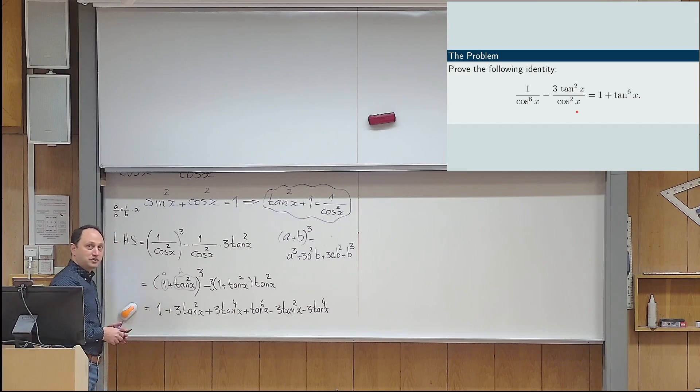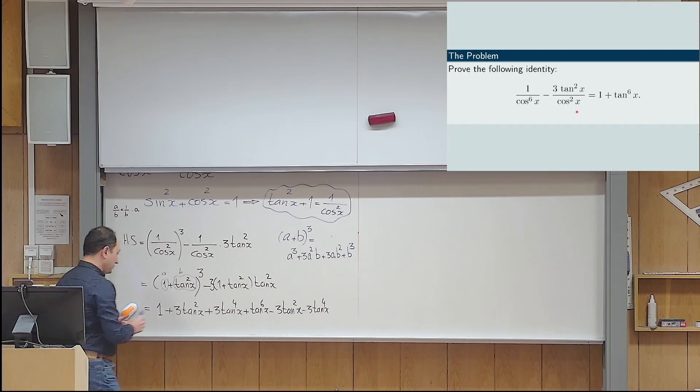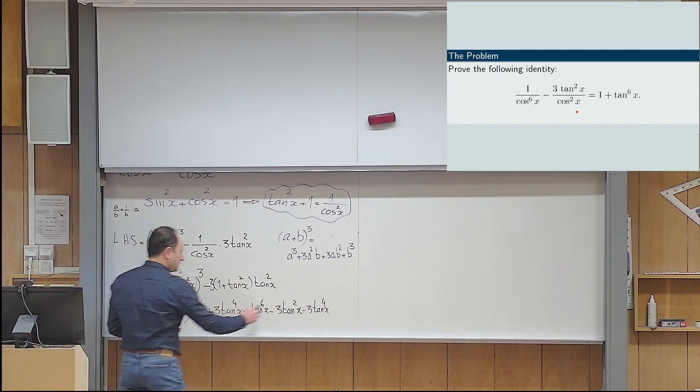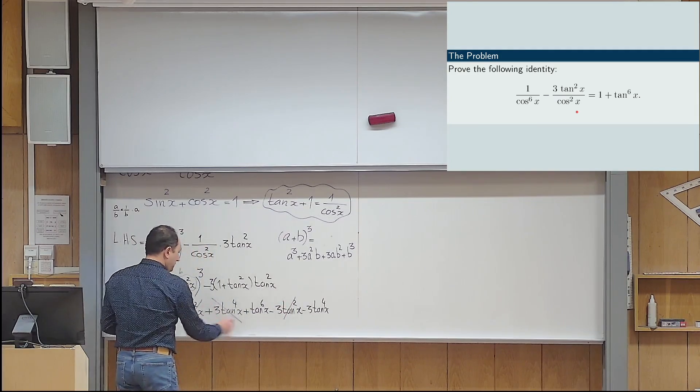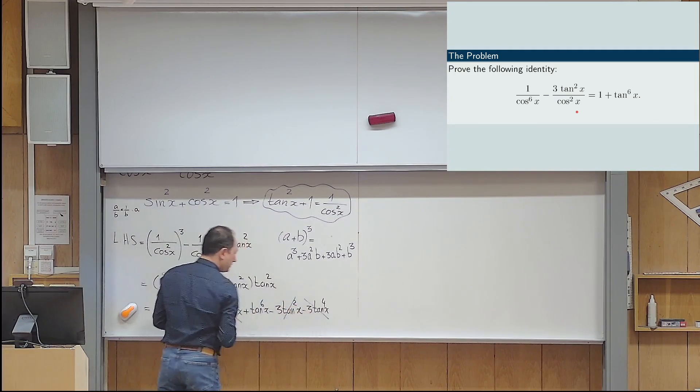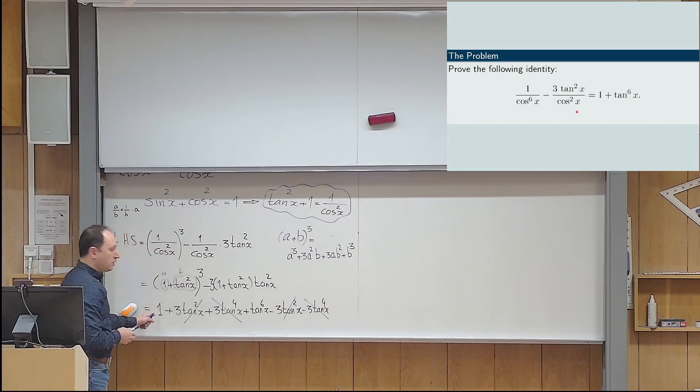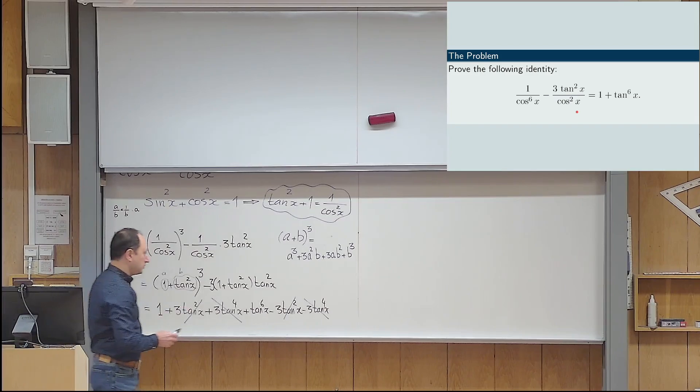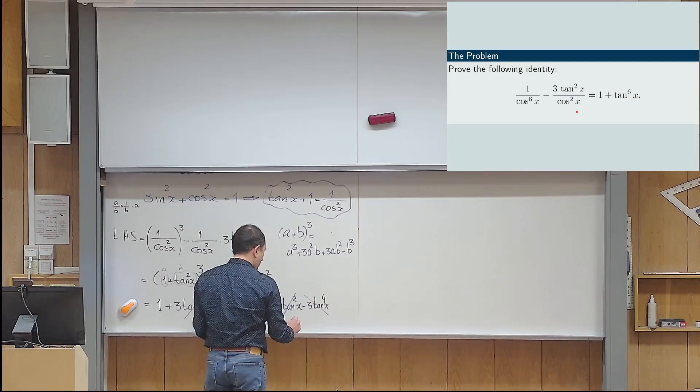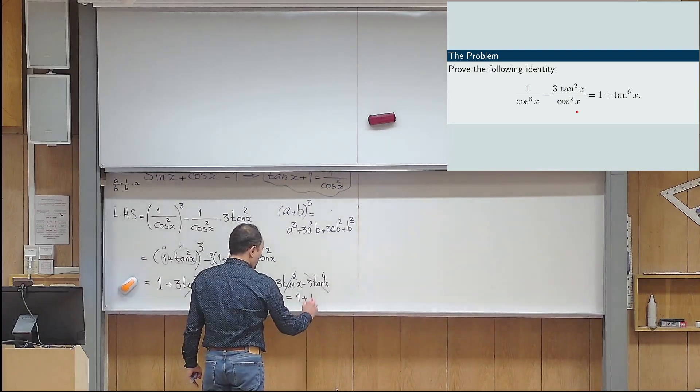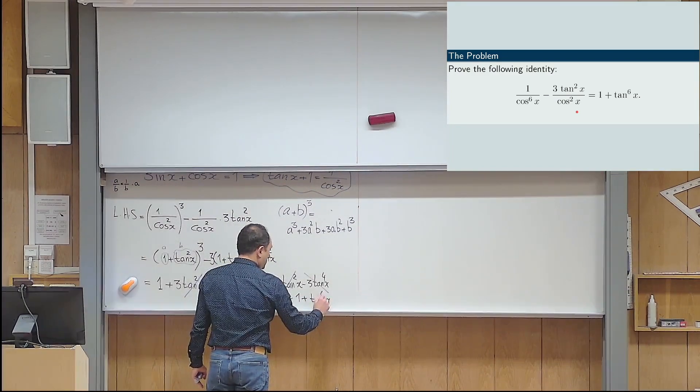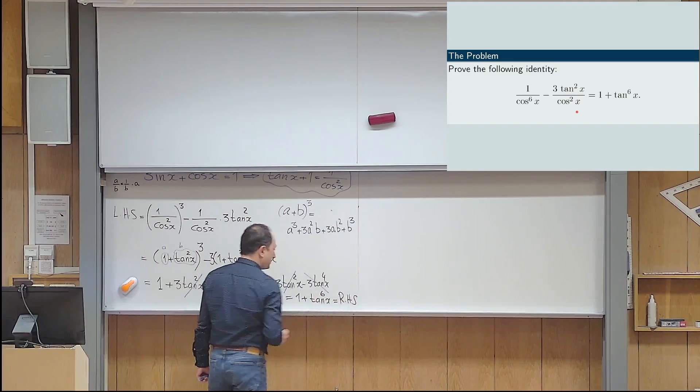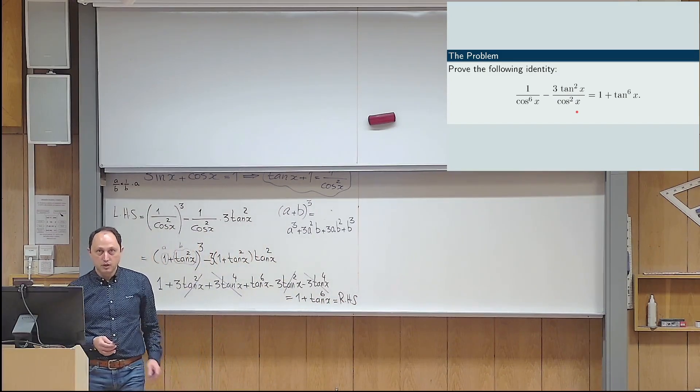And then everything canceled out. That is, everything that's not necessary is actually canceled out. You see, this one and that one are canceled. This one and that one are canceled. So, what is left for me is just 1 plus tan x to the power of 6. So, the answer is 1 plus tan x to power of 6. And that is exactly equal to the right.